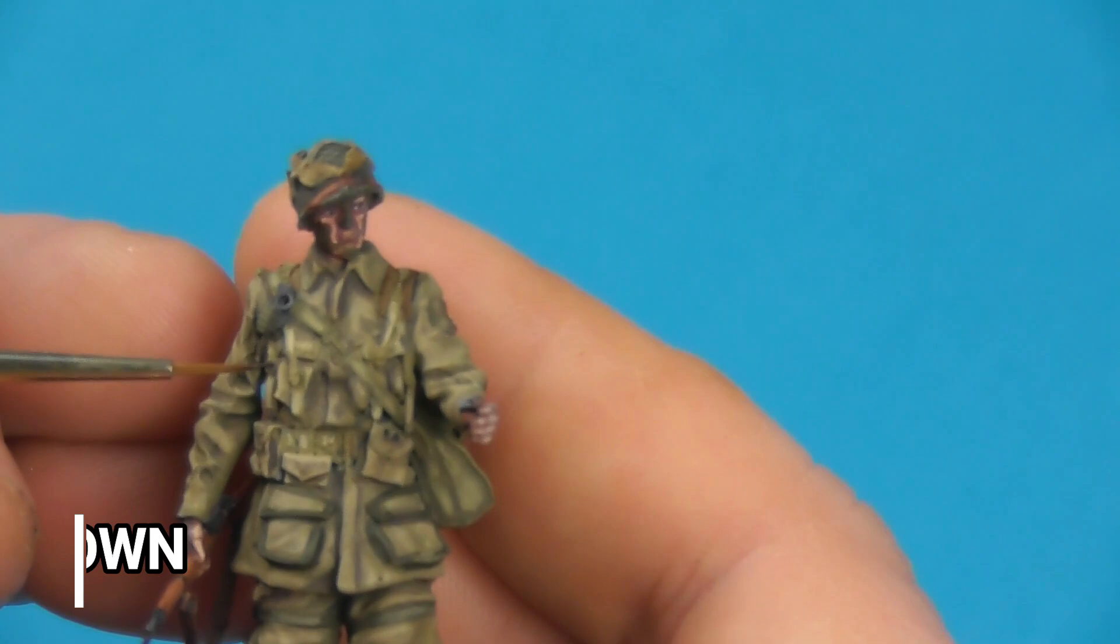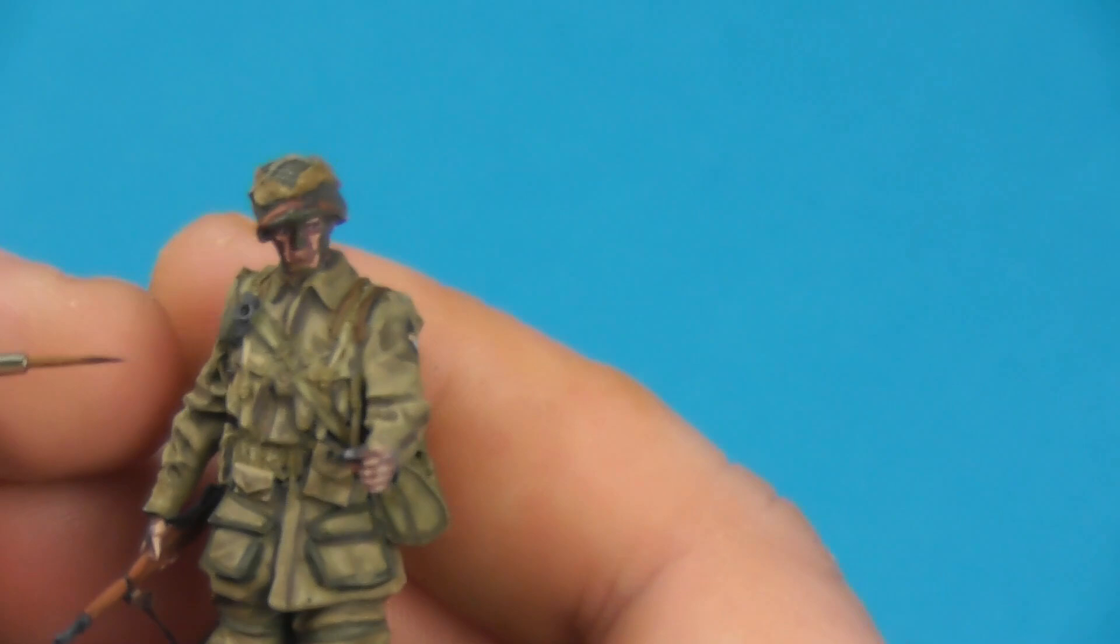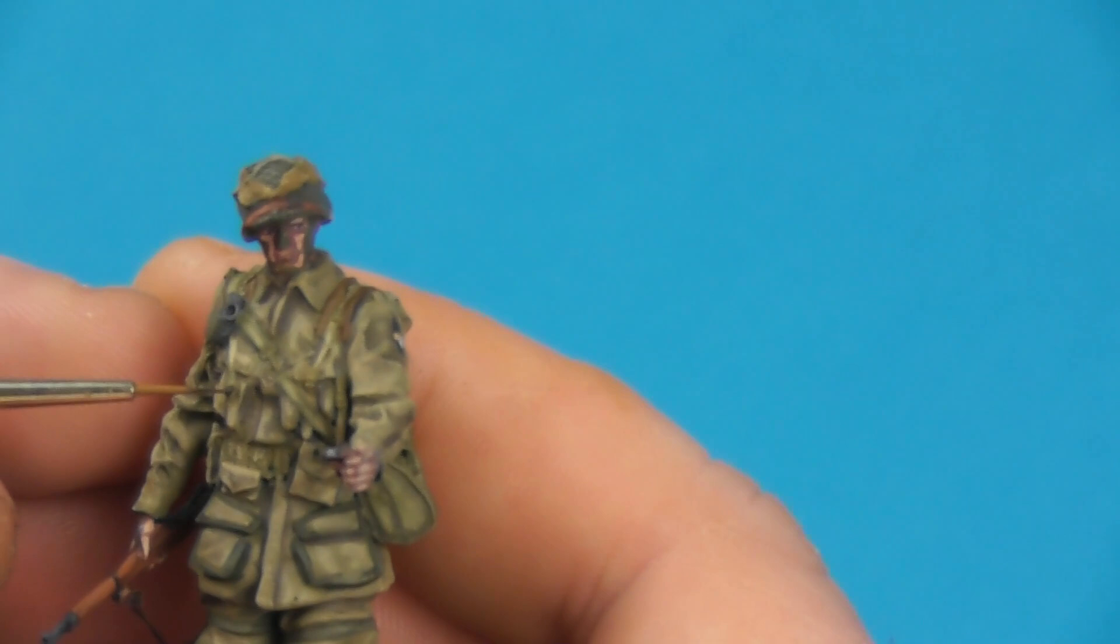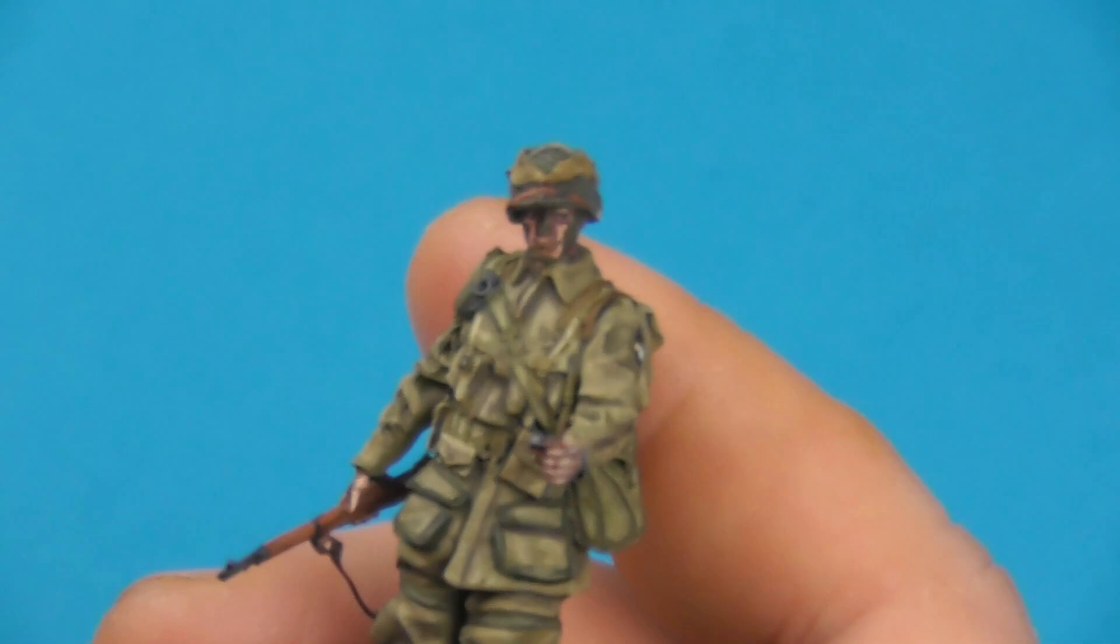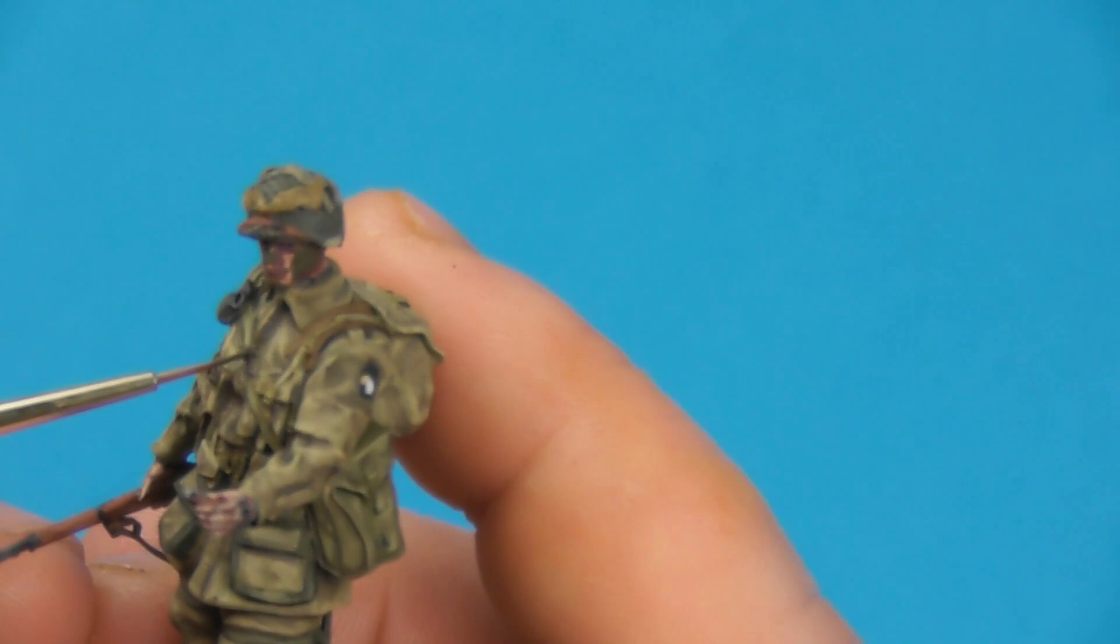For all the belt buckles and buckles for his webbing, I'm just going to take some Vallejo German Camo Black Brown, and using a double zero brush here, I'm going to very carefully cut these in. There's a lot of belt buckles and buttons on this uniform, so it does take a bit of time. A nice double zero brush with a really fine point will make life very easy for you. And with that, our paratrooper is ready to drop into Normandy.